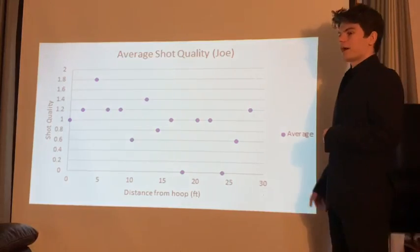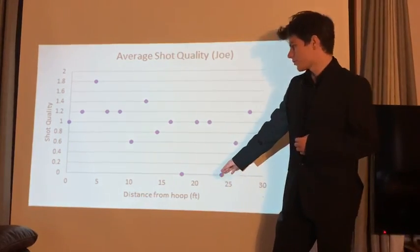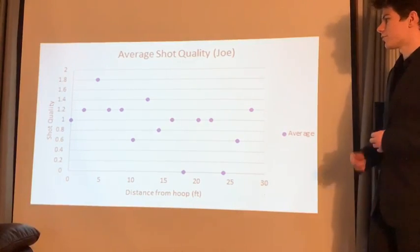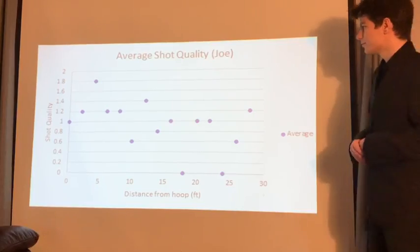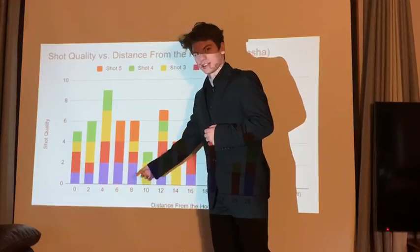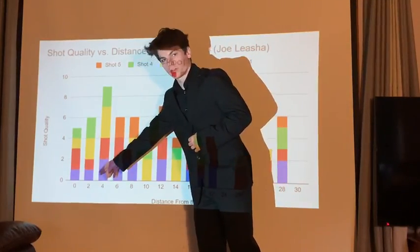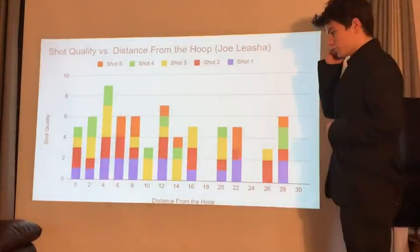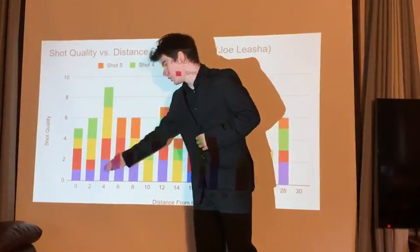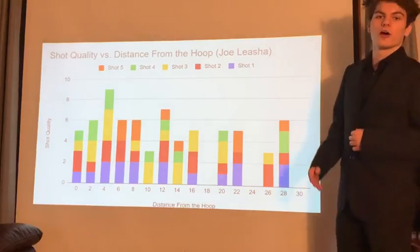The shot quality average — as you can see, these are the closest distances. It goes down the further away he gets. The blue bars, as you can see, will go up to a two for a swish and down to a one for a bank, because those represent the quality of each shot. That's why some bars are smaller. Where you see colors missing, it means he did not make that shot.